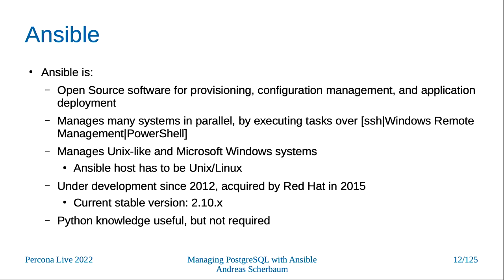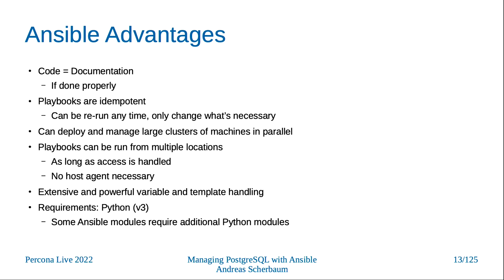However, the host running your Ansible must be Linux or Unix — you cannot run it on Windows. One of the nice things is that if you write a playbook, it is basically documenting your infrastructure. It's idempotent — you can rerun an Ansible playbook as many times as you want; it will only change something if it's not the desired state. You can deploy this on many large systems in parallel. By default it's 10 systems in parallel, and then rotates over the servers you have — you can increase this if your Ansible host is powerful enough.